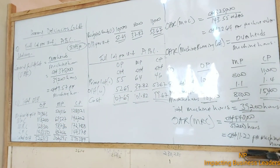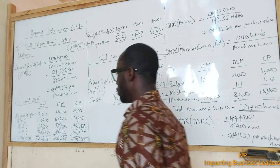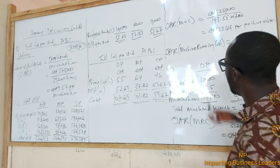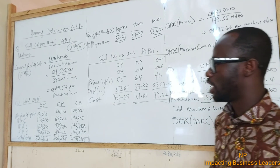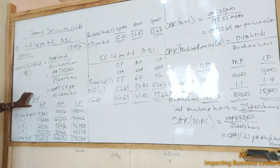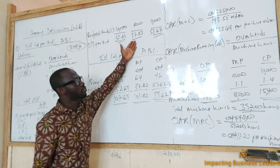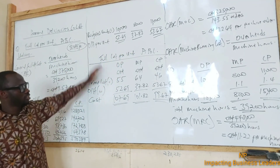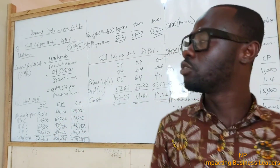So that is it for activity-based costing. The challenging thing here is the workings involved: first, calculating the overhead absorption rates for each cost pool using the cost drivers, and then the second step is calculating the total overheads to enable you to get the cost per unit — the overheads per unit — which is what we bring in when computing the full cost.